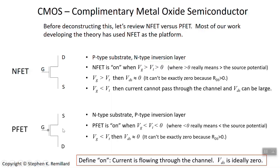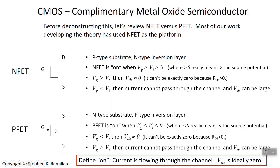When the gate is less than threshold, you can run current through the PFET and the voltage across it will be very small. In digital electronics, we set things up so you don't actually push current through. If the PFET is turned off — the case when the gate voltage is greater than the threshold voltage — current cannot flow and the drain-source voltage will be large. The NFET and PFET have all these opposite characteristics.